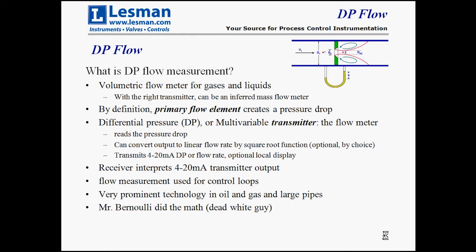This signal is then transmitted as a 4 to 20 milliamp or sometimes as a Modbus or Profibus signal, and you can read the signal on the optional local display. The receiver is responsible for interpreting what that 4 to 20 milliamps or the Profibus or Modbus means. What you get in the end is a flow measurement used in control loops, prominently used in the oil and gas industry and for large pipes of any diameter.